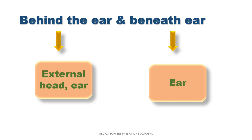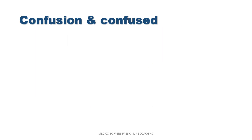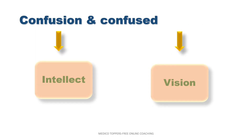Next confusion: as we discussed earlier, confusion is given under the intellect chapter and confused is in vision — confused vision. Please don't think that confused is in mind, because in BBCR the confused rubric is given under mind chapter, and confusion is in sensorium.